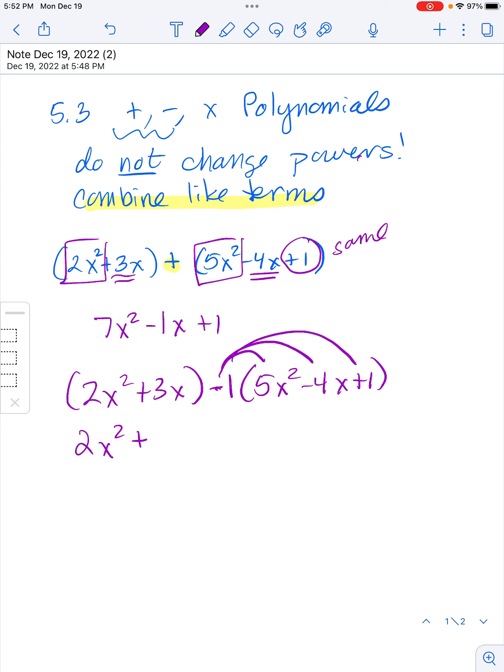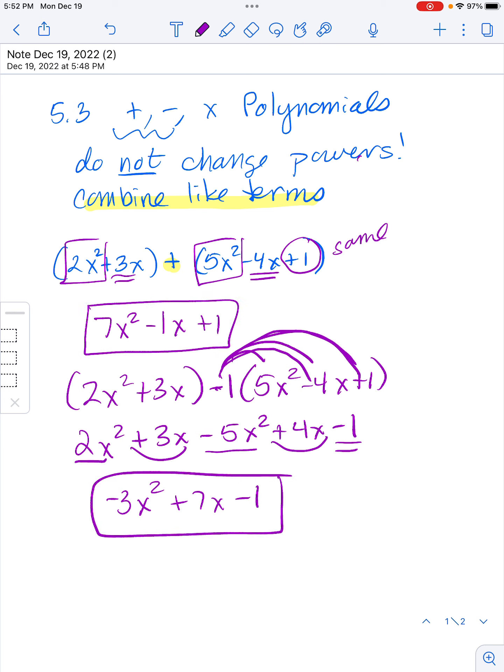Then I'll have still this two X squared plus three X, and then this will distribute and these will become positive and this will become negative. Now you just go back into the same thing. Two X squared minus five X squared is negative three X squared. Three X plus four X is seven X. And then a minus one is just a minus one. So even though the problems are really similar, the answers are really different because in one you are adding and in one you are subtracting.